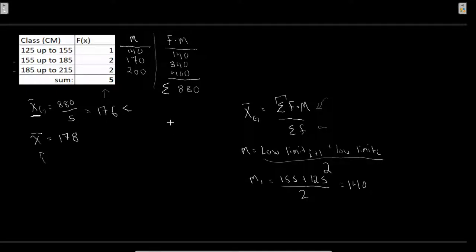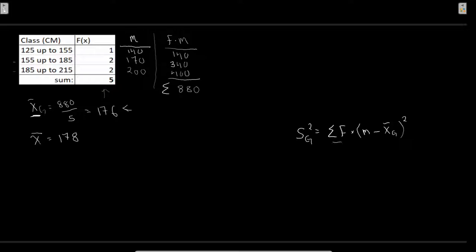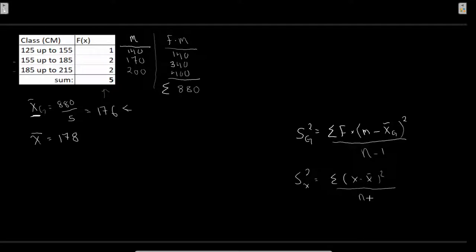Let's now look at our variance and standard deviation. For our grouped variance, we use a new formula. We took a look at the formula for the grouped mean; now for the grouped variance, it's going to be the summation of frequency times (midpoint minus X-bar grouped) squared, all over n minus 1. Let's compare this to our normal variance formula: summation of (x minus x-bar) squared, all over n minus 1.